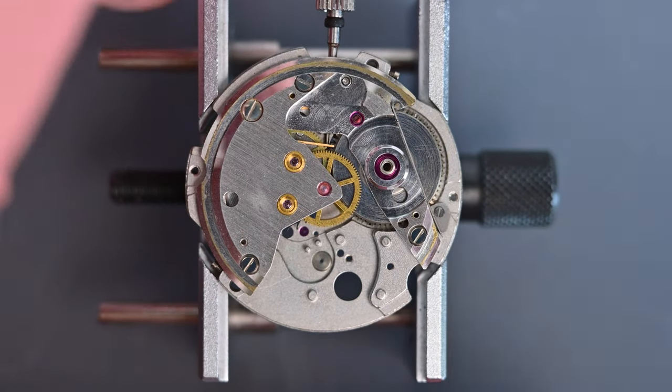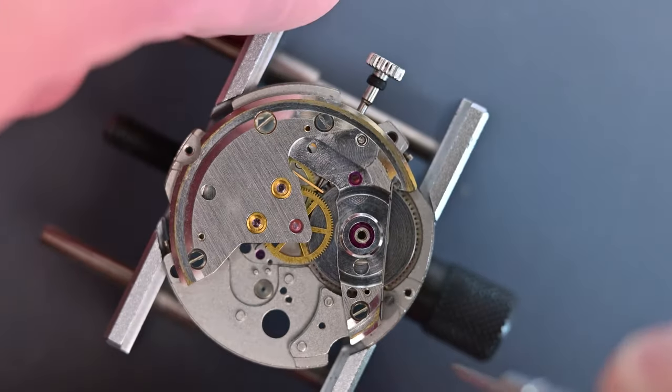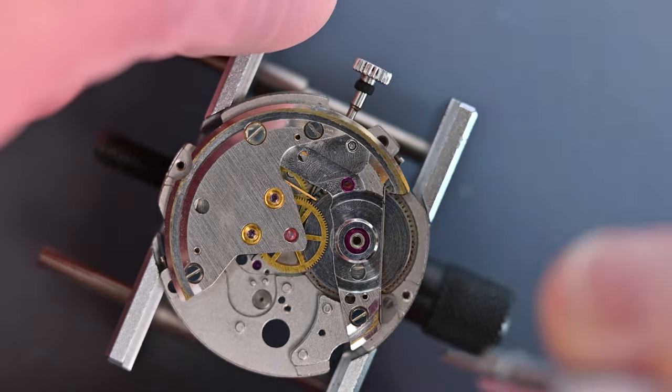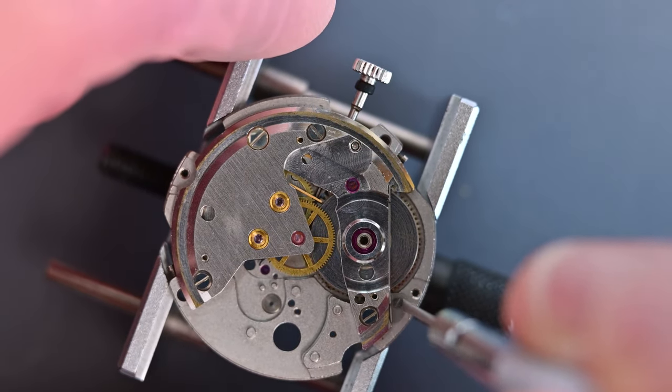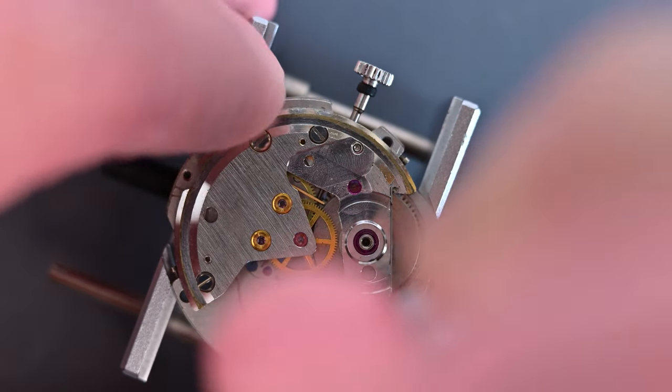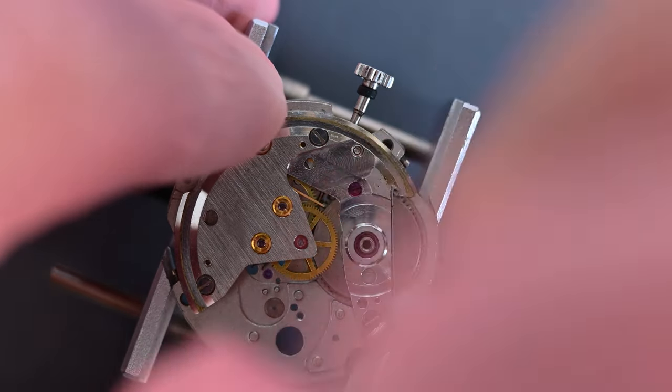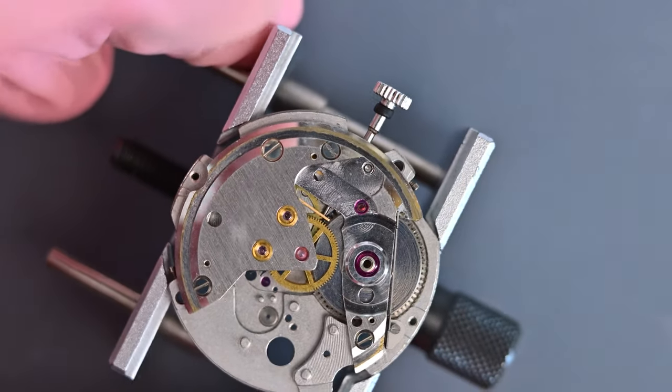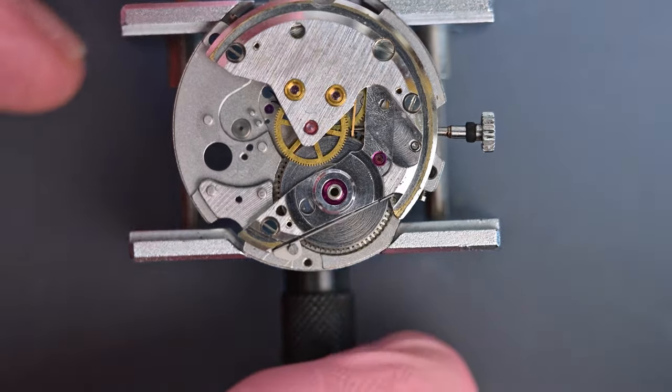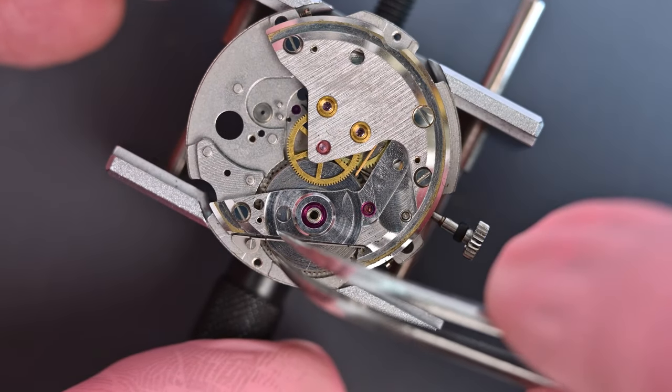Next job is to remove the click spring. There's a small screw just here. So let's just loosen that off. And then we can just lift the whole spring and screw out.